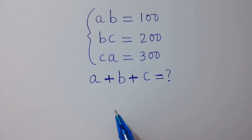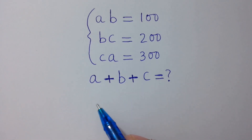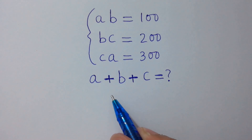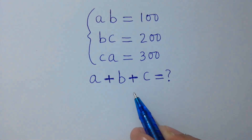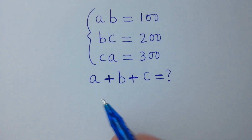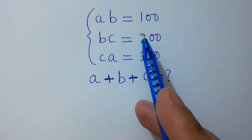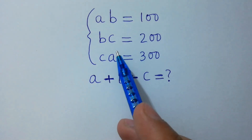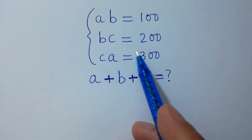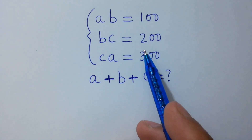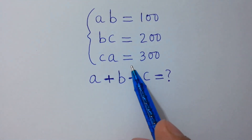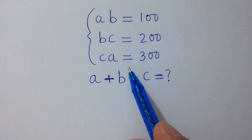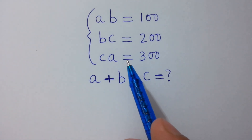Hello friends. Find the value of a plus b plus c if ab equals 100, bc equals 200, and ca equals 300. Let's solve it.